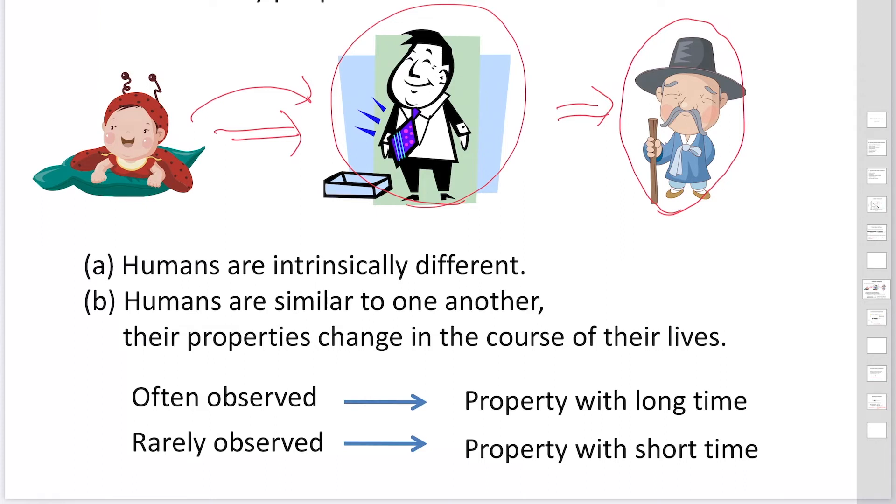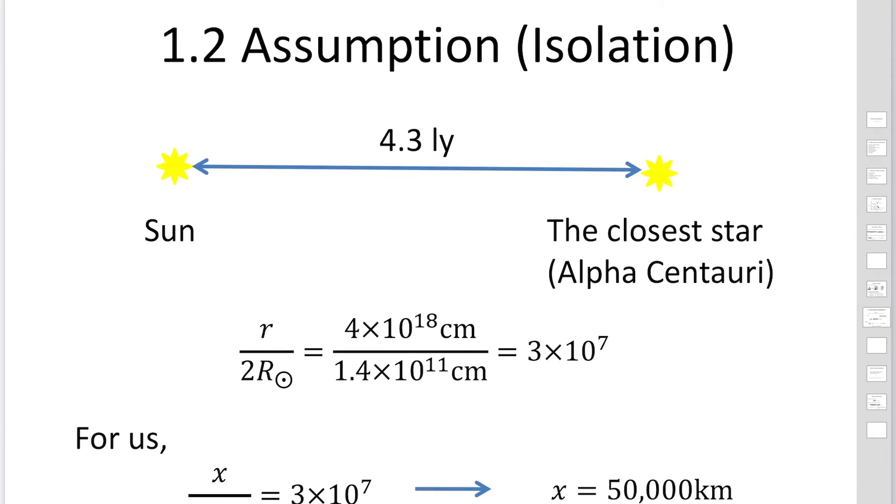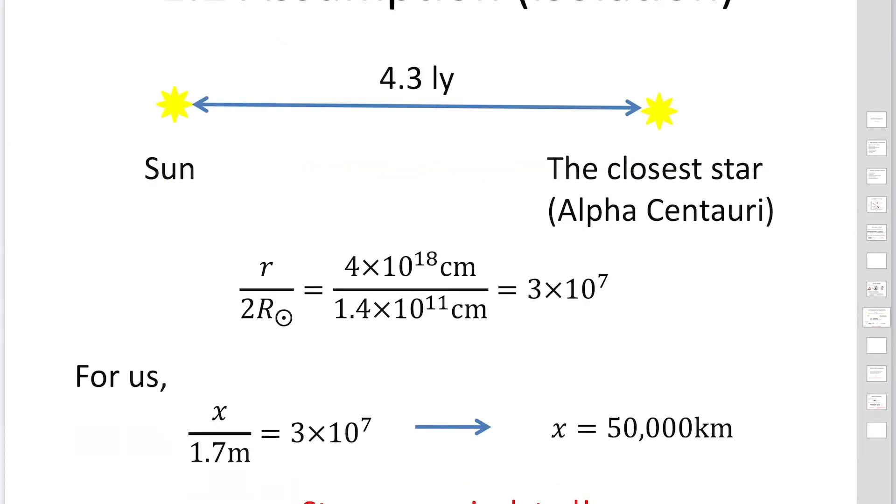Then we understand the second interpretation is correct. We could interpret the history of the stars. Now we'd like to explain the assumptions when we study the evolution of stars.